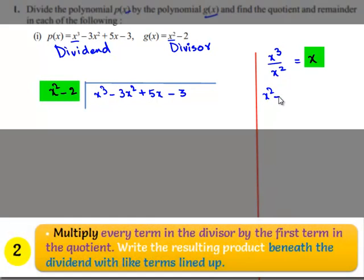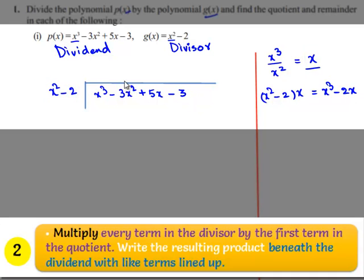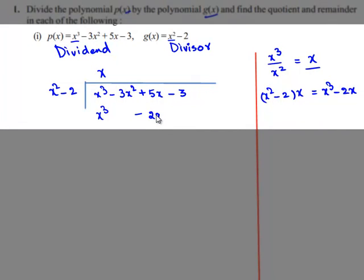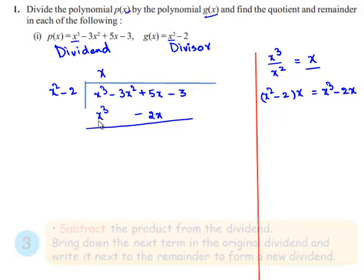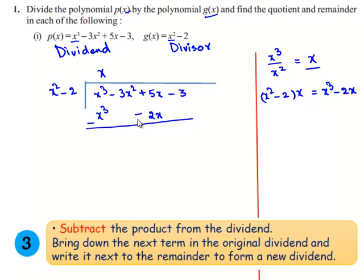The divisor x square minus 2, when multiplied by x, gives x cube minus 2x. So x is written in the place of the quotient and the multiplication x cube minus 2x is written here. On subtracting, the signs are changed. x cube and minus x cube cancel, giving minus 3x square plus 5x plus 2x, which is plus 7x, and minus 3. So the new dividend is minus 3x square plus 7x minus 3.